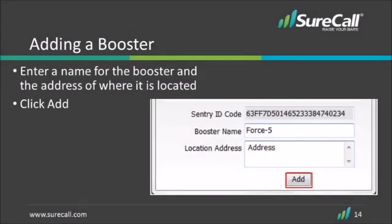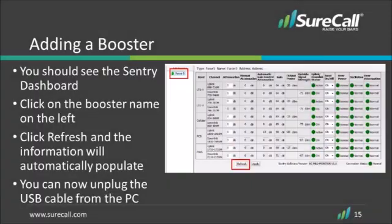Now you have the opportunity to create a name for the booster this Sentry is synced with. If you are planning on using multiple boosters, consider giving each booster a unique, easy-to-remember name. This will make monitoring and troubleshooting later much easier. Once you have created a name and entered the address where the booster and the Sentry are located, click Add. You should now see the booster you just registered on the Sentry dashboard. To access the booster information, simply click on the booster you wish to view and click Refresh.